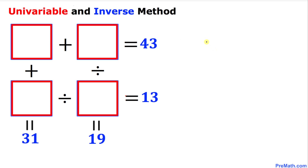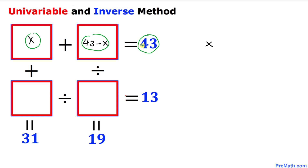Since we are dealing with the univariable method, we will work with just one variable: x. I'll write x in the very first box. To have the row sum to 43, we use the additive inverse — the additive inverse of x is negative x — so the next box is going to be 43 minus x. Adding x plus (43 minus x) gives us 43.